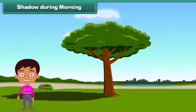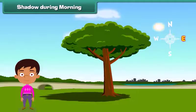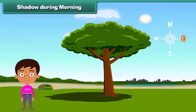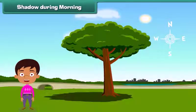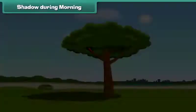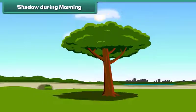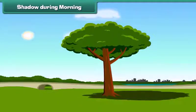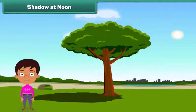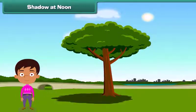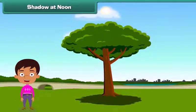As we all know, the sun rises in the east. In the morning, the sun is in the east, so the shadow of the object forms in the west. Now just look at its length — the length of the shadow changes as the sun moves towards west. Now it's noon and the sun is overhead. Did you notice the shadow of this tree? The shadow of the tree now becomes small.